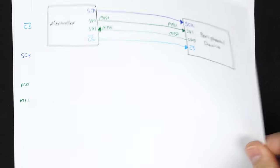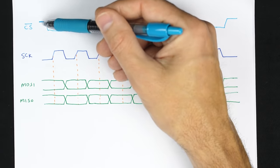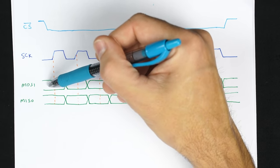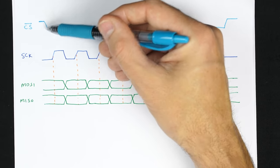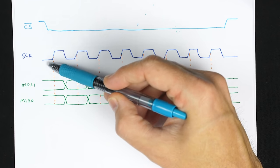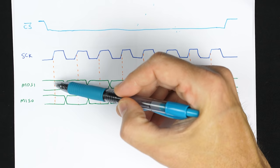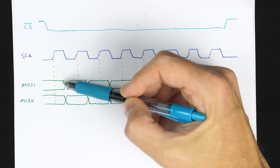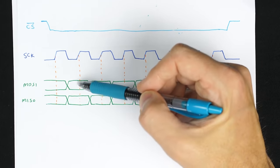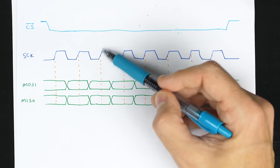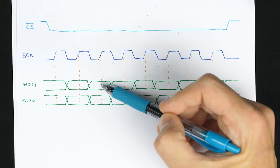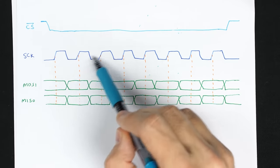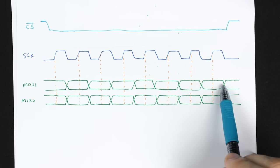Once we've got those signals, here's basically how it works. The controller manages chip select and serial clock, as well as the MOSI data signal. The first thing that happens is chip select goes low. Then at each clock transition from low to high, the master sends a bit. When the clock transitions from high to low again, the bit on the data line may change so that the next time the clock goes high there's a different bit there. This is how the master side transmits data.